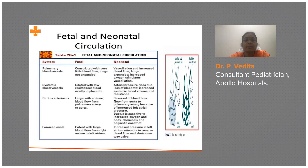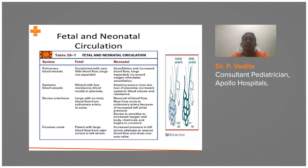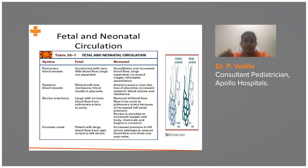To summarize: the pulmonary blood vessels expand and resistance decreases; systemic blood pressure increases. The ductus arteriosus is very sensitive to oxygen — once the baby starts breathing, it closes functionally almost immediately, within minutes. This functional closure of the ductus arteriosus happens because of the rise in oxygen levels.